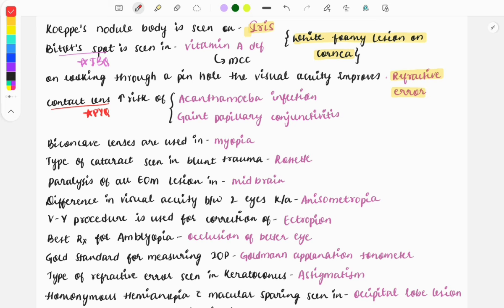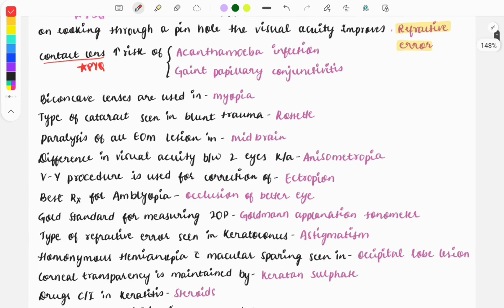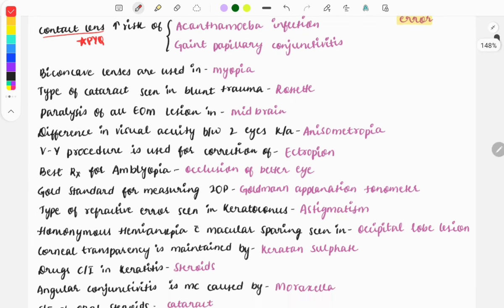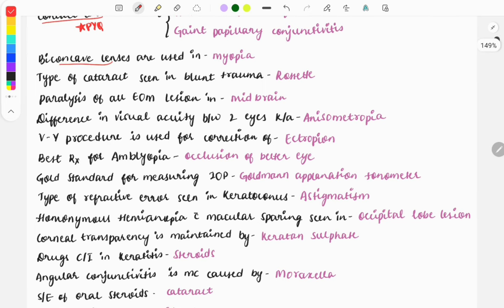Biconcave lenses are used in myopia. The type of cataract seen in blunt trauma is Rosette cataract. Another finding in blunt trauma is the Vossius ring, which is due to bleeding vessels.